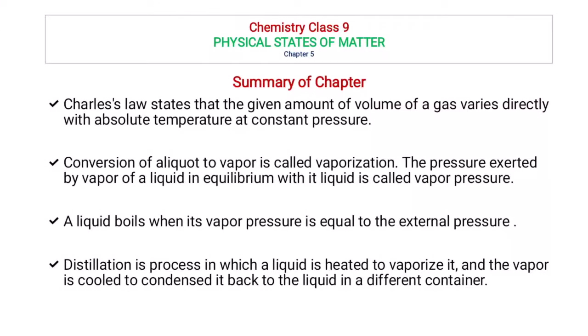According to Charles's law, for a given amount of gas, the volume will vary with absolute temperature if the pressure remains constant. This means that when pressure is constant, the temperature change will cause a corresponding change in the volume of the gas.